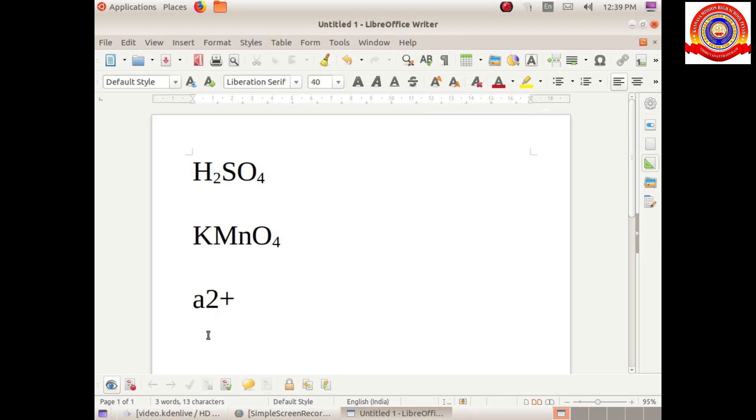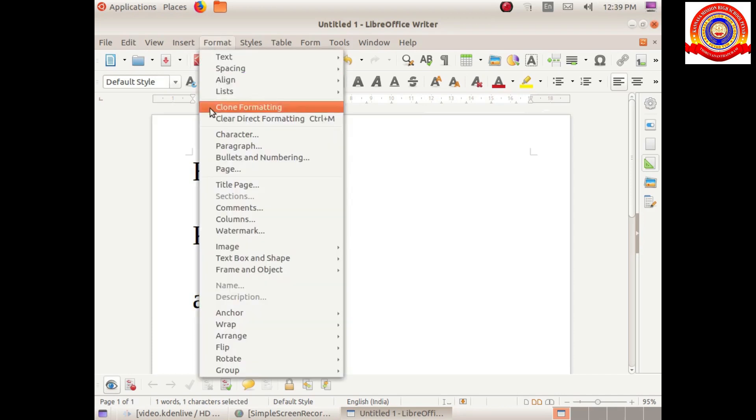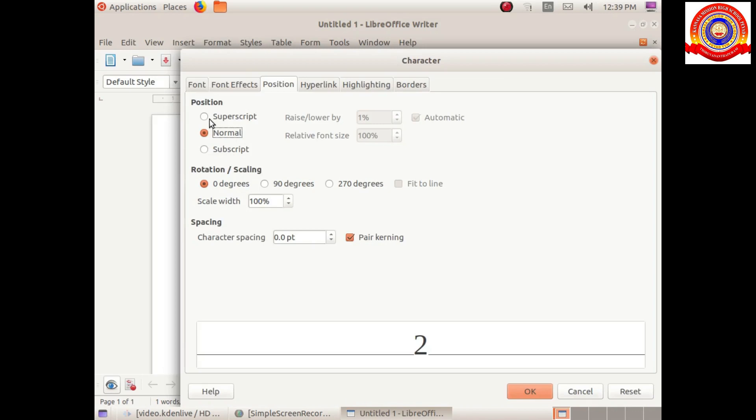Now listen to this. I am typing a² + 2ab + b². Here also we want these two twos in the upper position, right? So in the same way: Format, Character, Position, take Superscript. Okay.